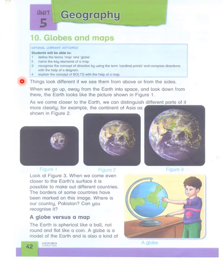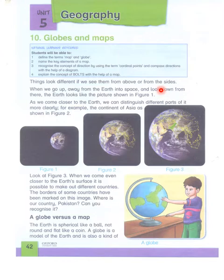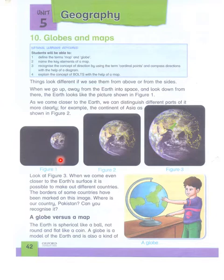Now we will study this in Urdu as well. Things look different if we see them from above or from the sides. When we go up away from the earth into space and look down from there, the earth looks like the picture shown in figure one. As we come closer, we can distinguish between different parts of it more clearly.